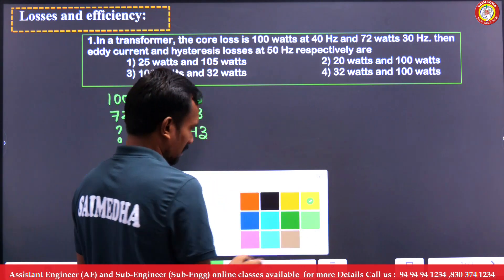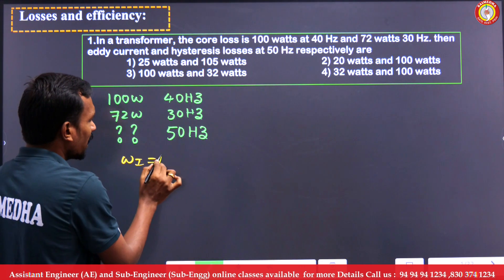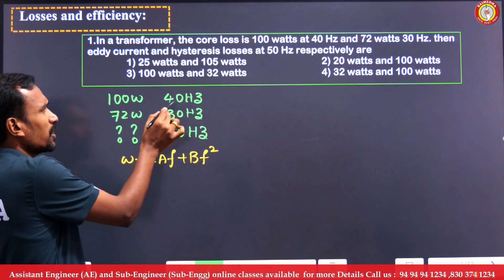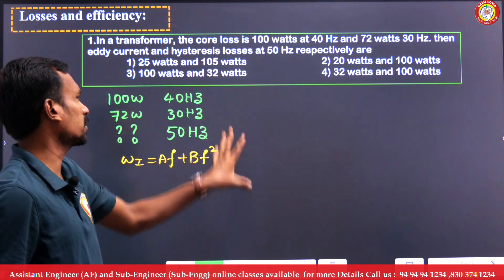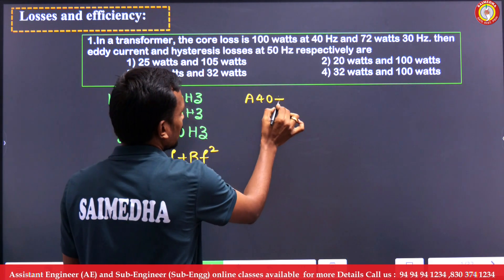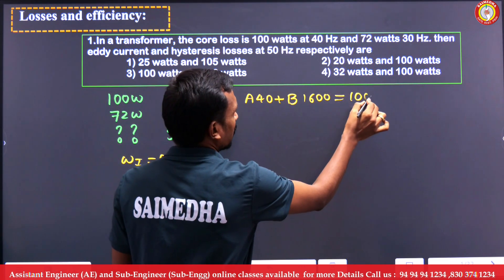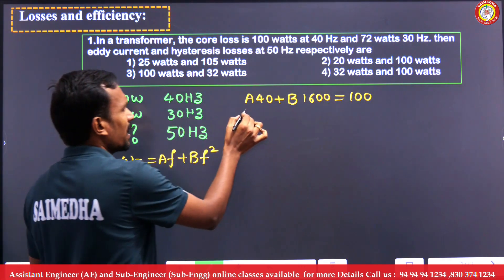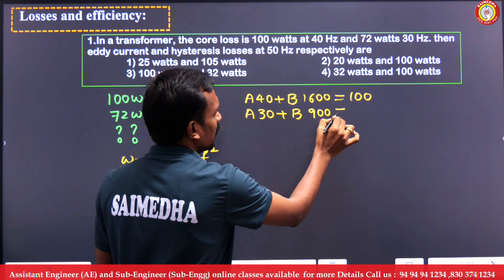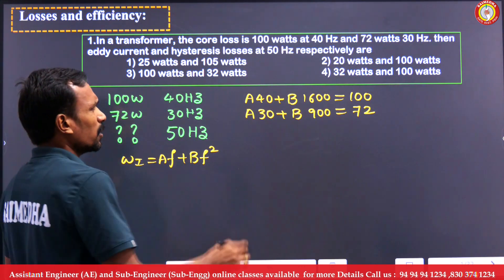How can we calculate this? First of all, what we know is: iron losses equals af + bf², when the V/f ratio is constant. Here the V/f ratio is constant — even though it is not given, we assume it. So: a×40 + b×40² = 100, and a×30 + b×30² = 72.